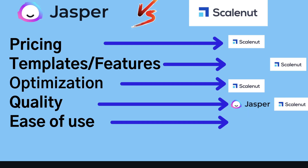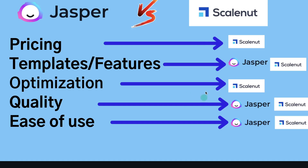My best advice when it comes to quality of output is to go out and use these tools yourself. Both Jasper AI and Scalenut have a free trial, so you can start generating output and figure out which one is best suited for your specific niche. I'll leave a link for both free trials in the description below. And lastly, for ease of use, as you saw in this tutorial, both of these tools are very easy to use — very intuitive even if you have no experience using AI copywriters. So for ease of use, both of these tools get a five-star rating.